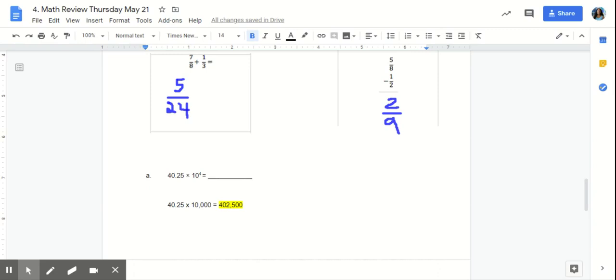Last but not least, we have our last problem here. You have 40.25 multiplied by 10 to the power of 4. Now we all know how to multiply by powers of 10. So the best thing to do is to rewrite this problem. So we now have 40.25 multiplied by 10,000.